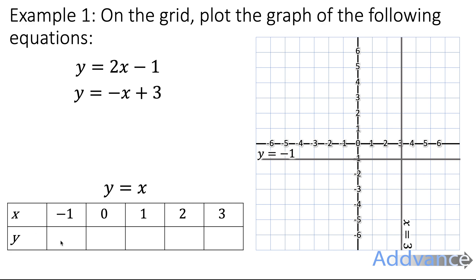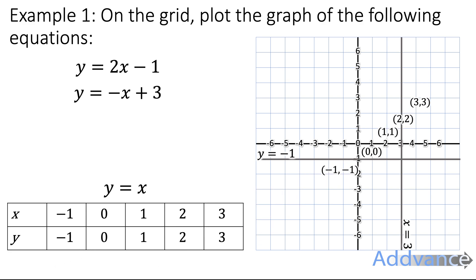So if x is minus 1, then y is minus 1. If x is 0, then y is 0. 1 and 1, 2 and 2, 3 and 3. The y-coordinates equal the x-coordinates. That means the coordinate pairs will be: minus 1, minus 1; 0, 0; 1, 1; 2, 2; and 3, 3. We can plot those coordinates on the grid and connect them up to get this straight line, which is the line y equals x. So every y-coordinate on that line is the same as the x-coordinate.